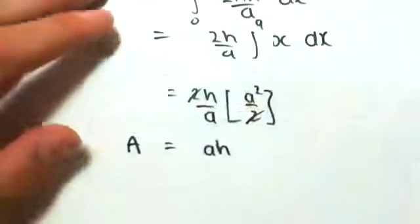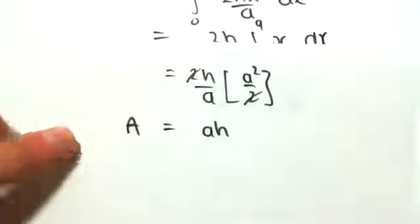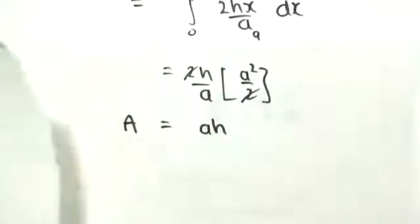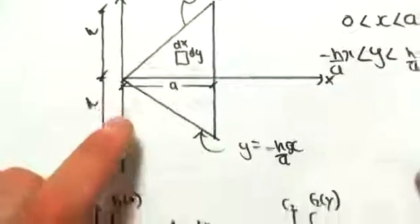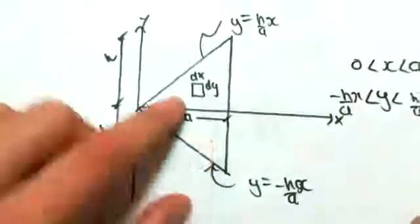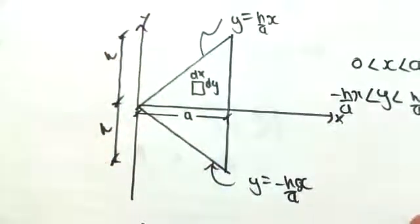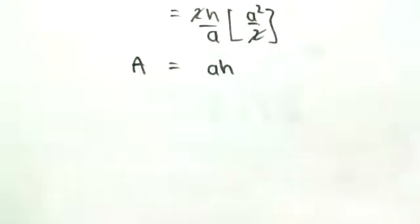Okay? So we find that the area is equal to a times h, which in our problem, we know that the area is base times height on 2. So our base is a. This height is 2h, so it'd be a by 2h on 2, which would be a h. So our area makes sense.